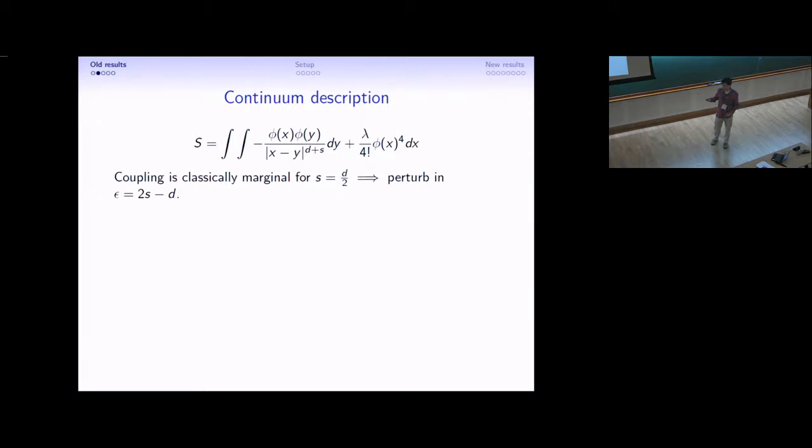Therefore, it's easy enough to show that with the quartic interaction, the flow that it induces will be perturbative if 2s minus d is a small positive number.